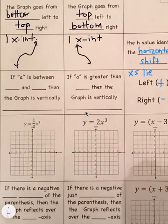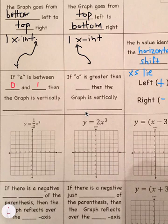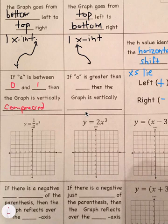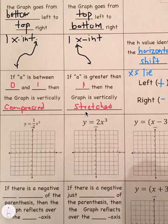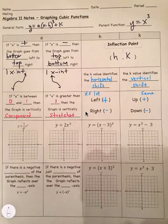If a is between 0 and 1 — meaning the absolute value of a is between 0 and 1 — then the graph is vertically compressed, getting closer to the x-axis. If a is greater than 1, then the graph is vertically stretched, pulling away from the x-axis. Hopefully you remember this from the other functions we've covered this year.